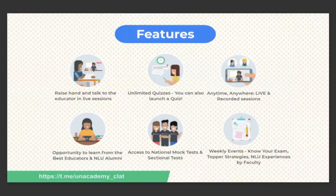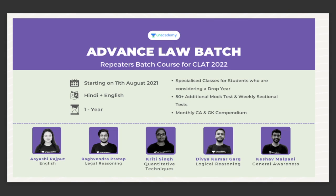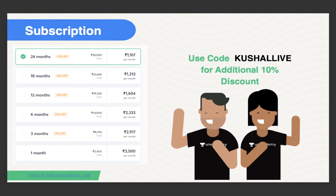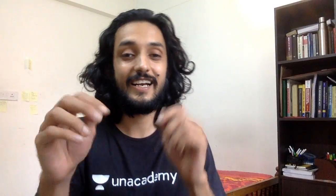I am going to tell you which batches on Unacademy are starting that you should definitely check out. For 2022 and 2023, both batches have started. In all batches, you will get a discount if you use my code: K-U-S-H-A-L-L-I-V-E. Now let us get into today's session. I will also tell you about other exciting features of Unacademy that will help you in your preparation.